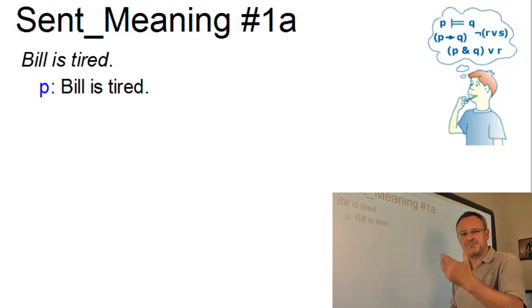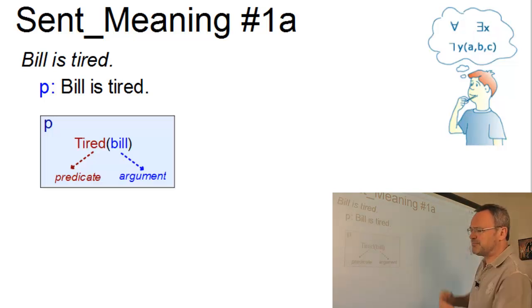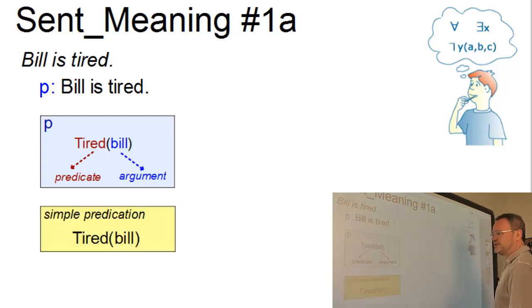In this proposition the predicate 'tired' assigns a property to its argument. Hence Bill is assigned the property tired. So we have the simplest form of a predication: Tired(Bill). Remember that the predicate is always capitalized and its arguments are written in small letters.